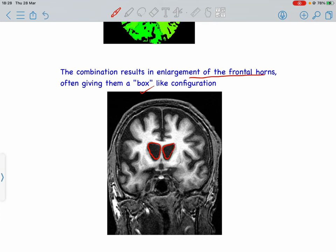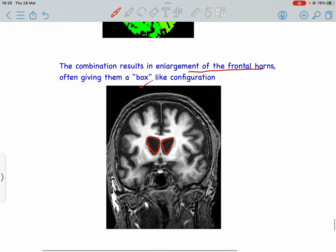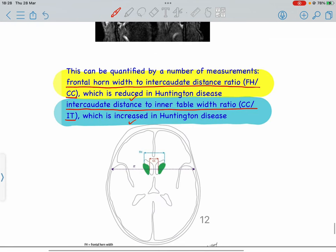These findings can be quantified by measurements. The frontal horn width to intercaudate distance ratio (FH/CC) is decreased in Huntington's disease. Similarly, the intercaudate distance to inner table width ratio (CC/IT) is increased in Huntington's disease.